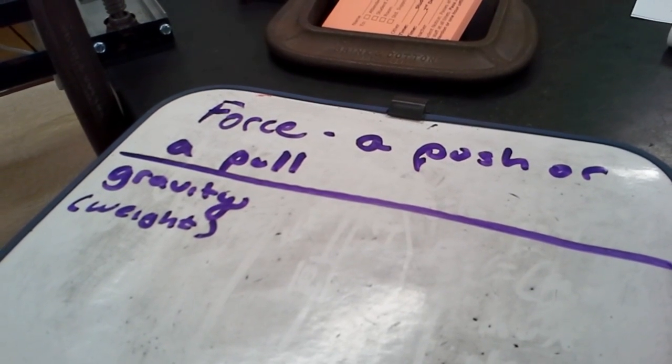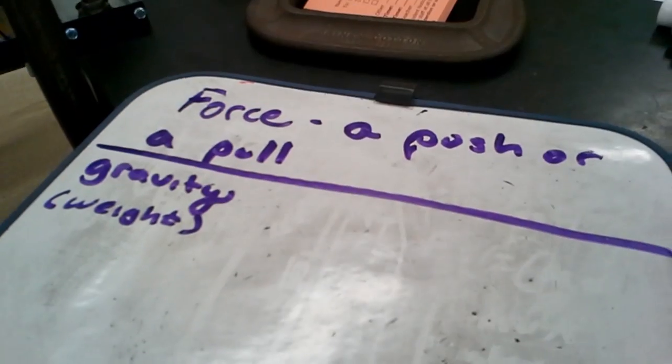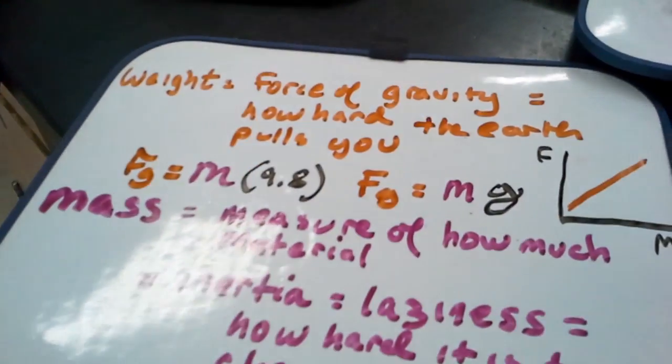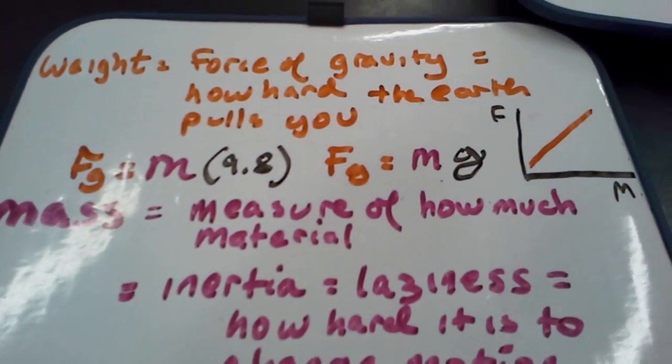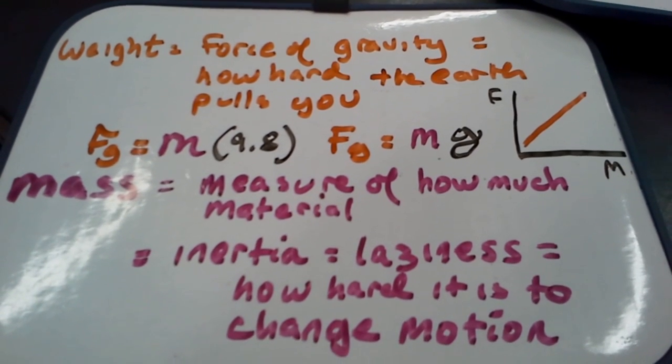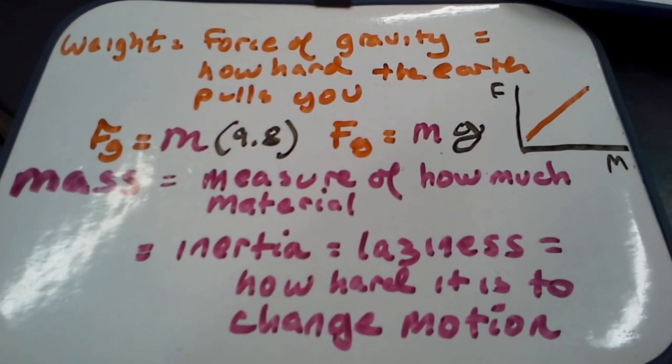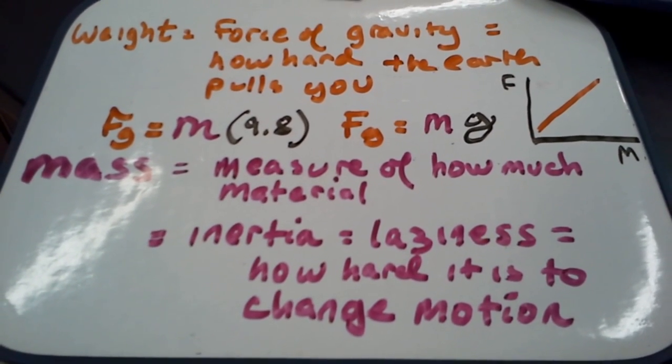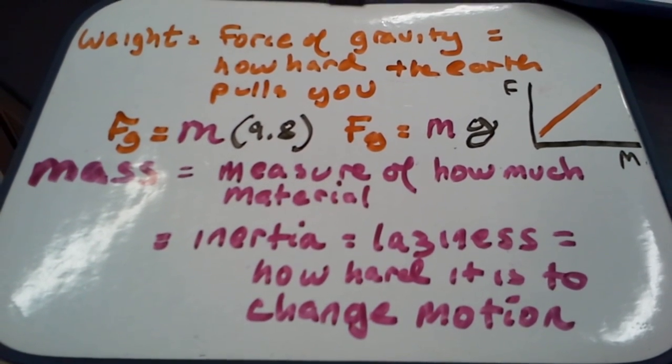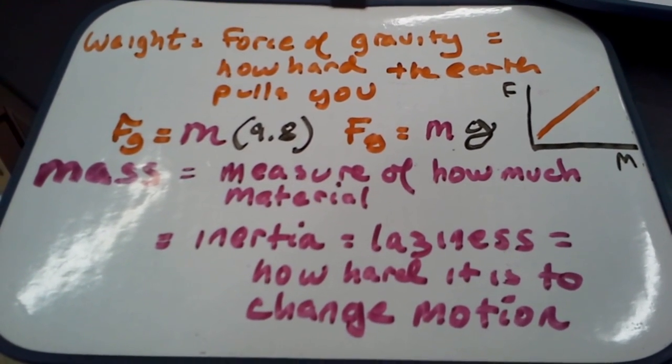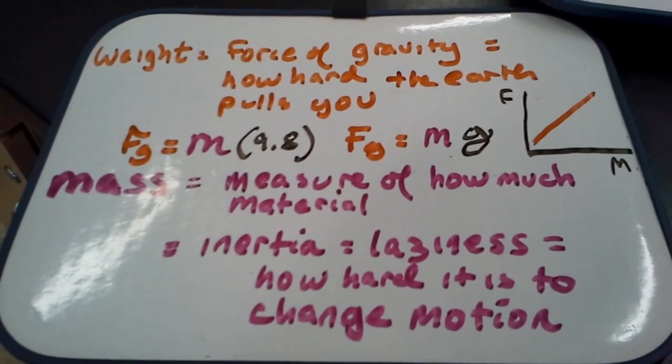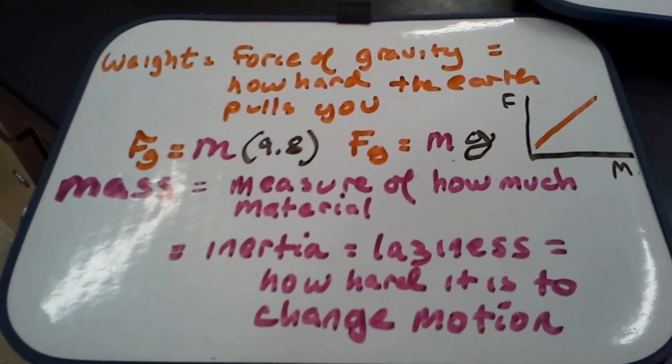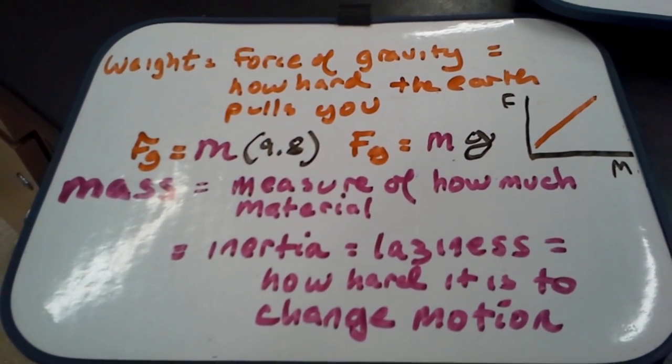These things together are going to make up the bulk of this unit. Here's a couple more definitions. Weight, the force of gravity, is literally how hard the Earth is pulling on you. Mass, in chemistry you've learned it as a measure of how much material you've got. It's kind of like that in physics as well, but it's this other thing too that we call inertia. Inertia is a fancy sounding word, but it's just Greek for laziness. What inertia is, what mass is, is how hard it is to change something's motion.